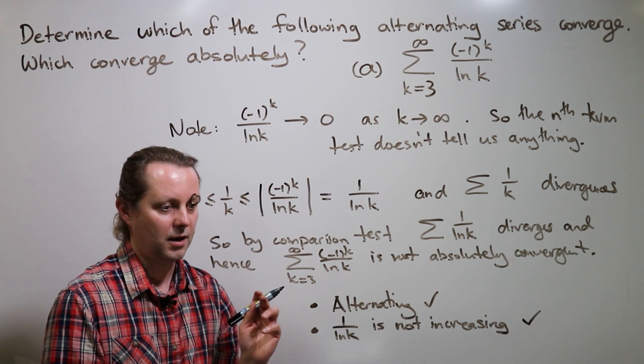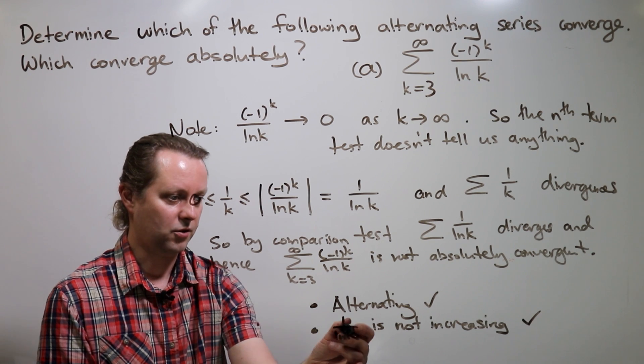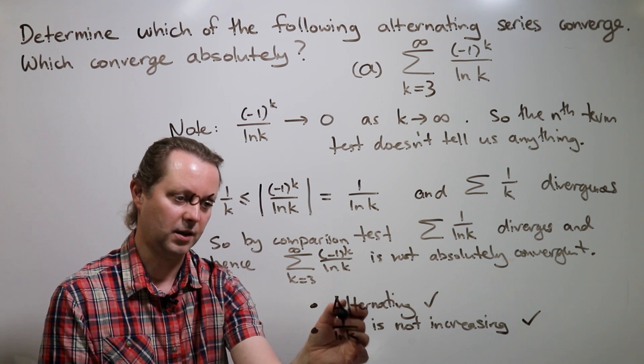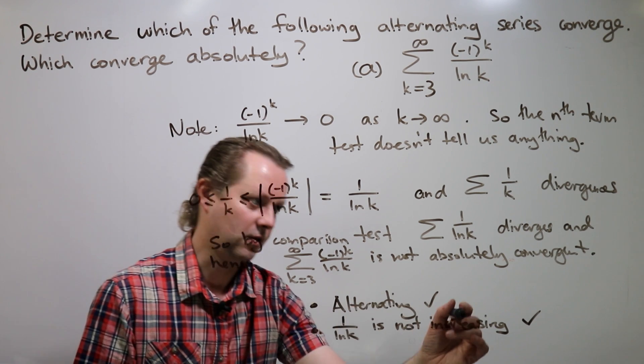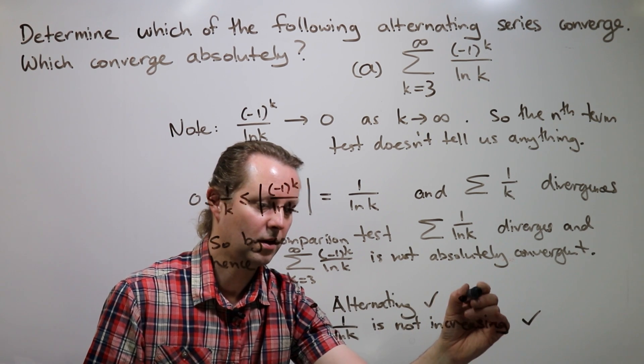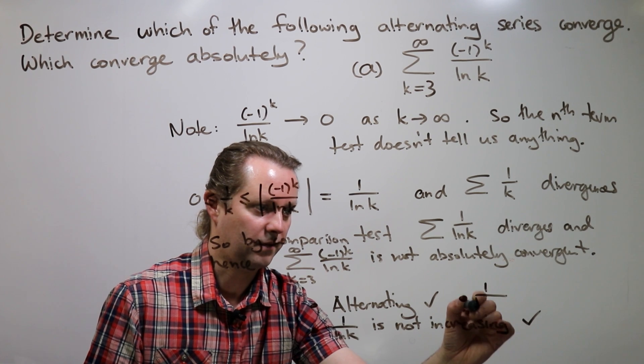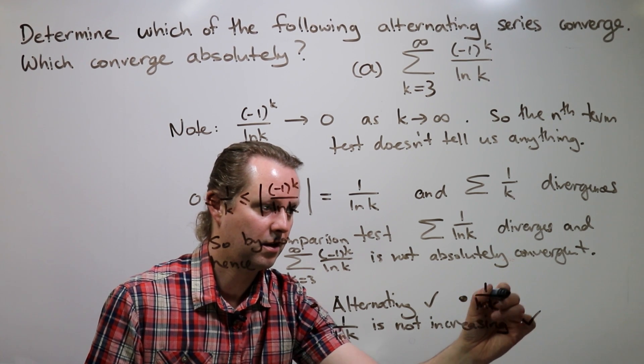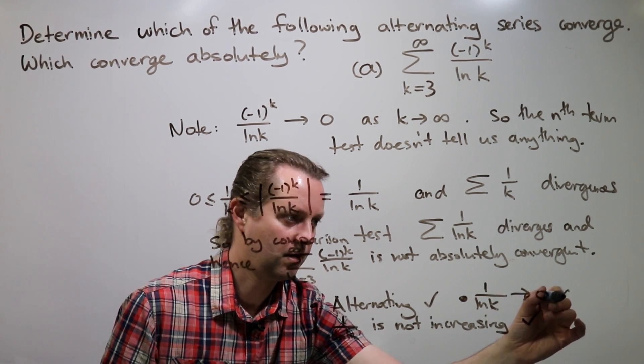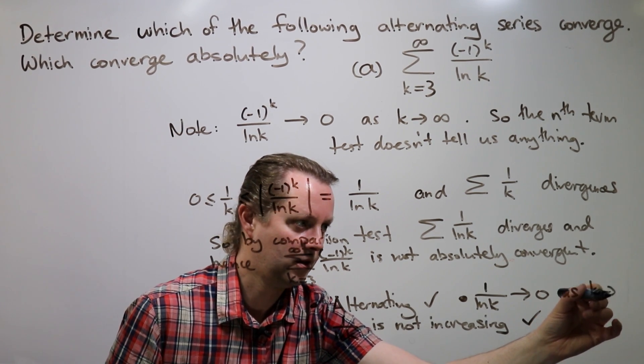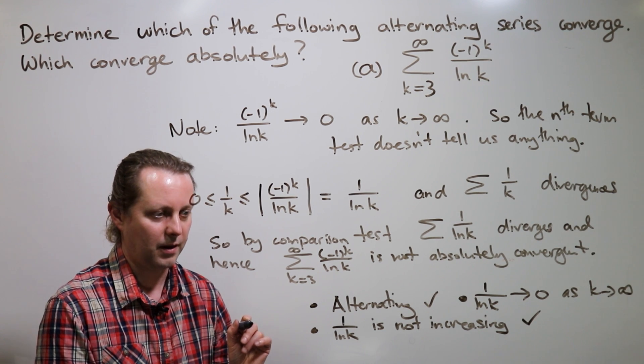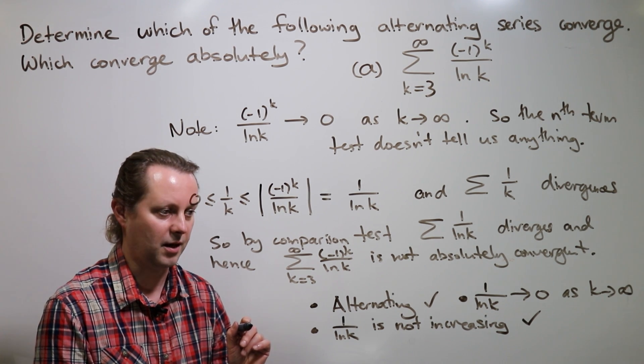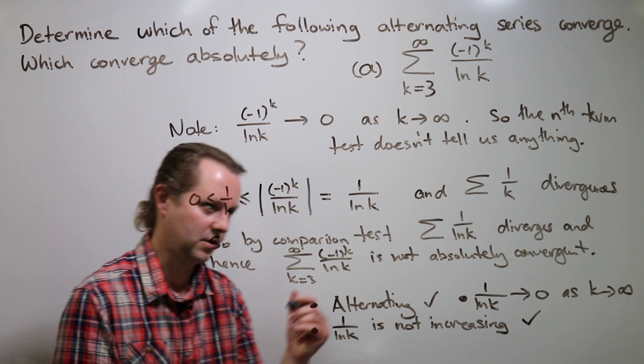And the third thing we need is that not only are the terms decreasing or not increasing, that they in fact go to zero as k goes to infinity. ln k goes to zero as k goes to infinity. And so all of these three things together tell us that the series is convergent by Leibniz test.